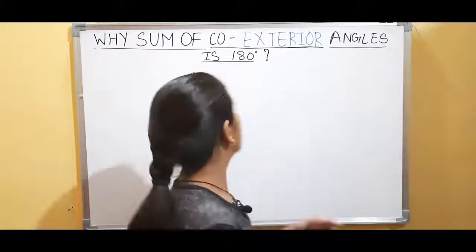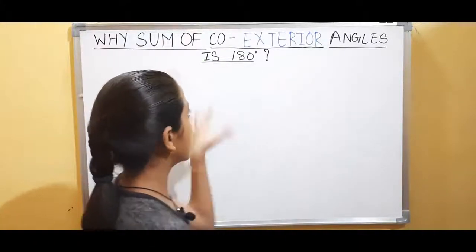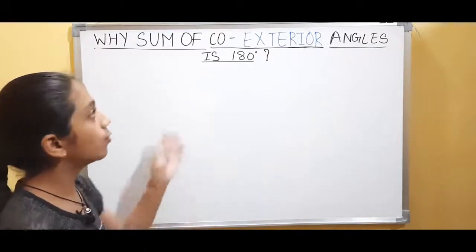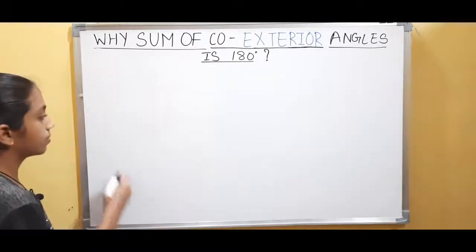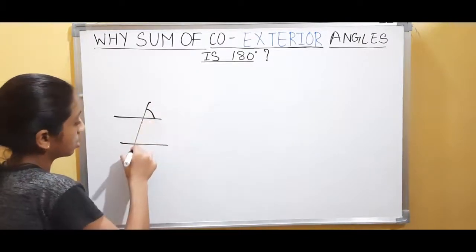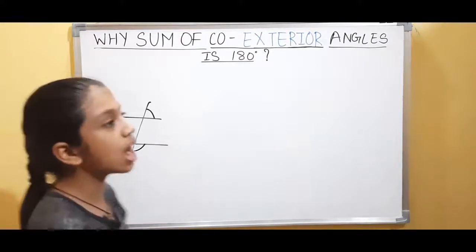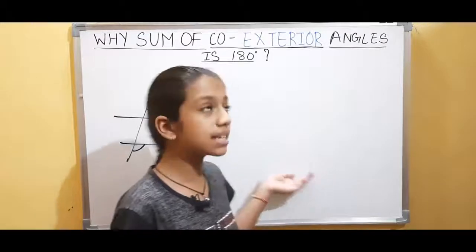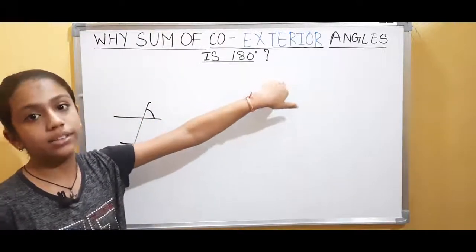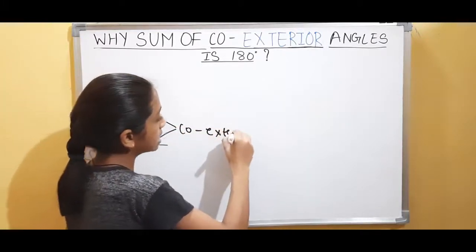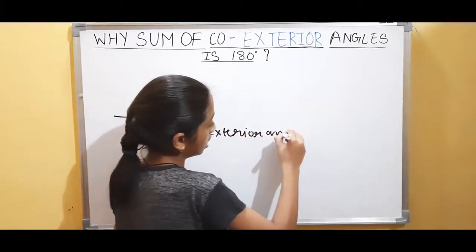Now we are going to discuss why the sum of co-exterior angles is 180 degrees. Let's take a glance at what co-exterior angles are. With two parallel lines and a transversal, the angles which are on the same side, outside the parallel lines — in the exterior of the parallel lines — are known as co-exterior angles. So these two angles are co-exterior angles.